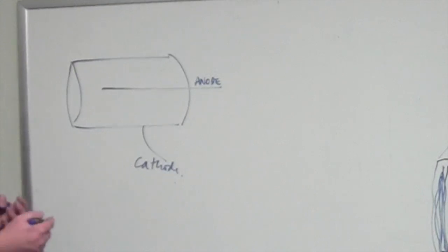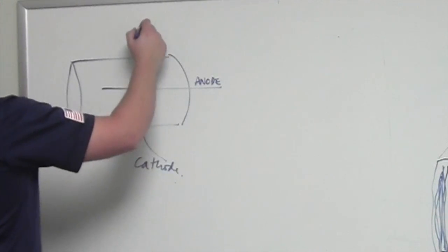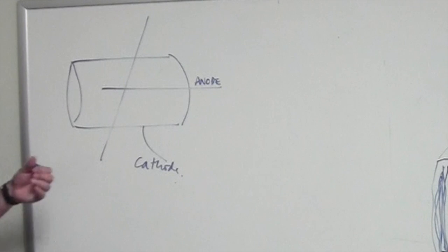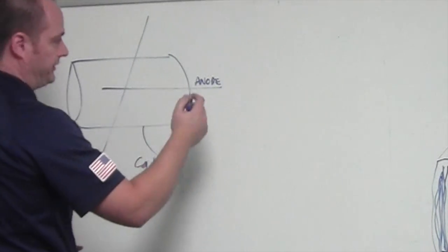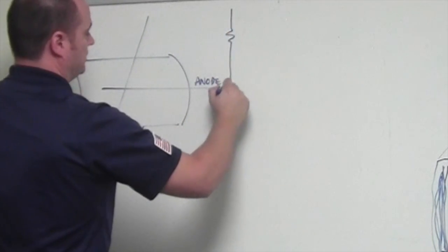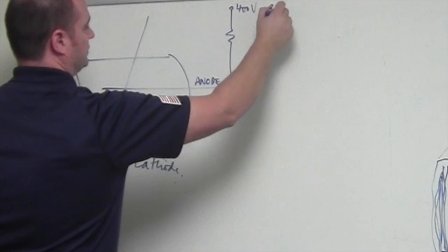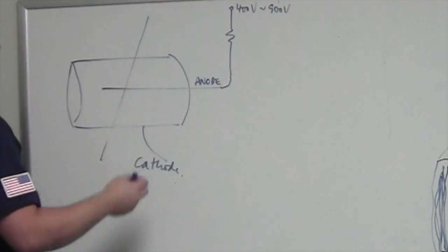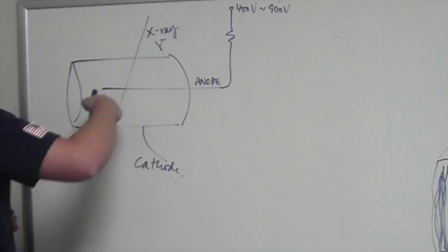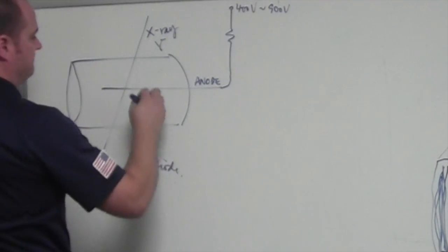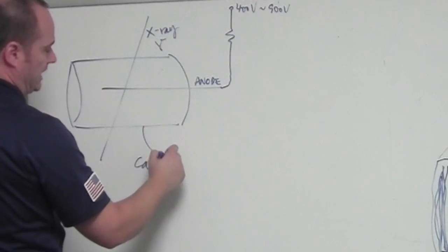The whole process of detecting radiation happens when an ionizing radiation particle, an x-ray or a gamma-ray, crosses the volume of this cylinder. The cylinder has gas inside and it is polarized with a high voltage, right? So you have, I can have here, four hundred volts to nine hundred volts depending on the GM tube that you're using. And so when this x-ray or gamma-ray hits this detector, an avalanche of ions is created, which then creates a signal out of the cathode.